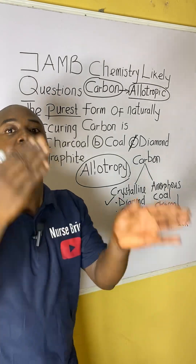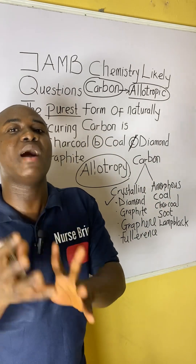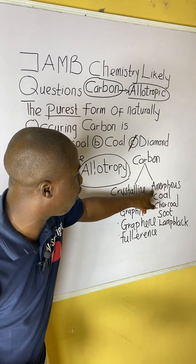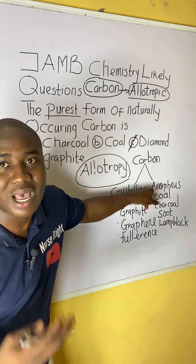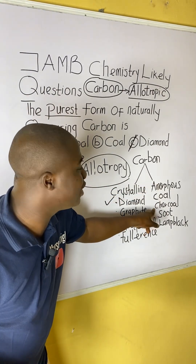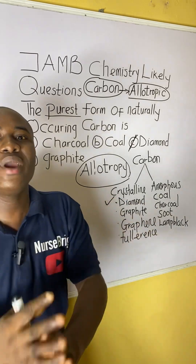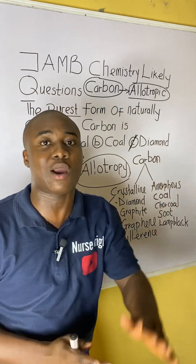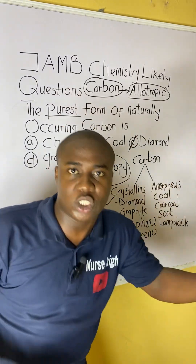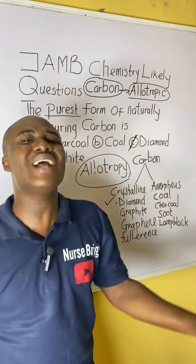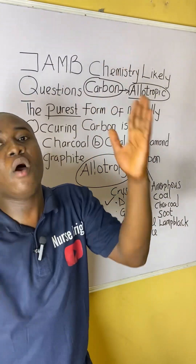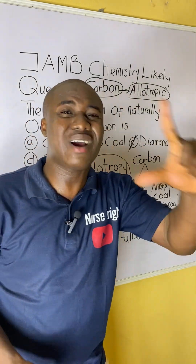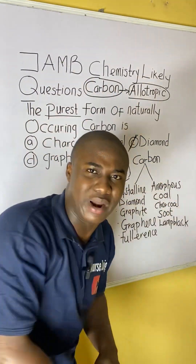Listen carefully. If they had asked what is the purest form of the amorphous allotropes of carbon, the answer would simply be charcoal. We have different types of charcoal: sugar charcoal, animal charcoal, and wood charcoal. Out of these, it is the sugar charcoal that is the purest form of the amorphous allotropes of carbon.